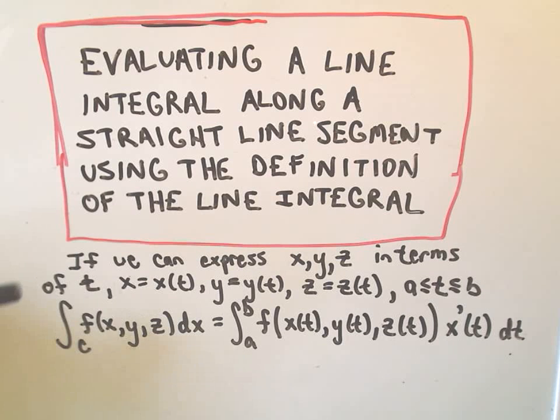So what we're going to do is we're going to parametrize our x, y, and z in terms of some new variable. We'll call it t, so it says x has a parametric representation x of t, y is y of t, z is z of t, along some interval a to b.